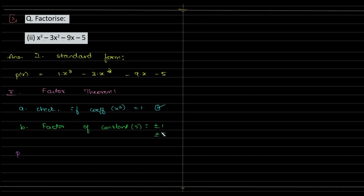We have four numbers to try. We need a number which makes this expression equal to 0. If we try 1: 1 minus 3 minus 9 minus 5 — the negative numbers are too big, so we try a negative number. Let's try x equals minus 1, since the negatives will become positive.